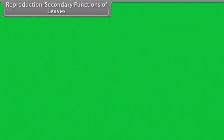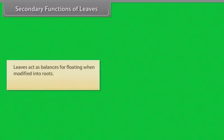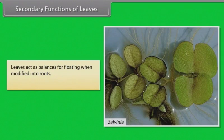Reproduction. Leaves help the plants in vegetative multiplication. Example: Bryophyllum. Leaves act as balances for floating when modified into roots. Example: Salvinia.